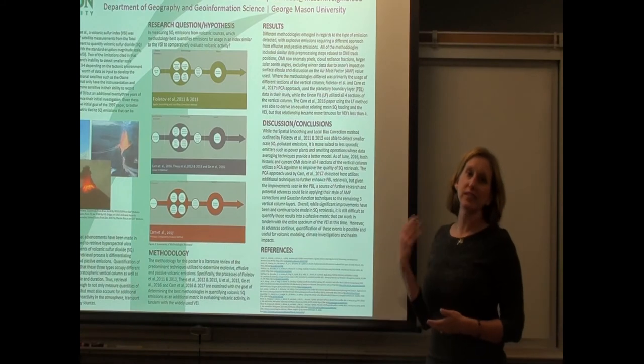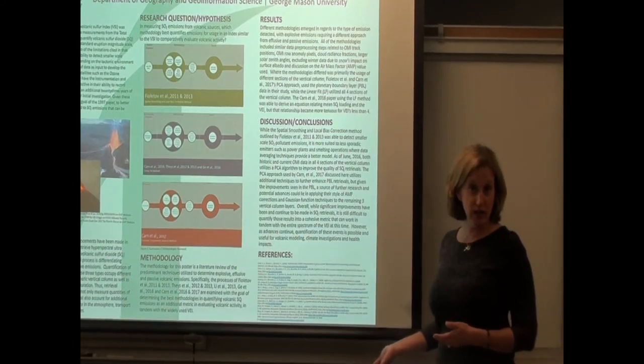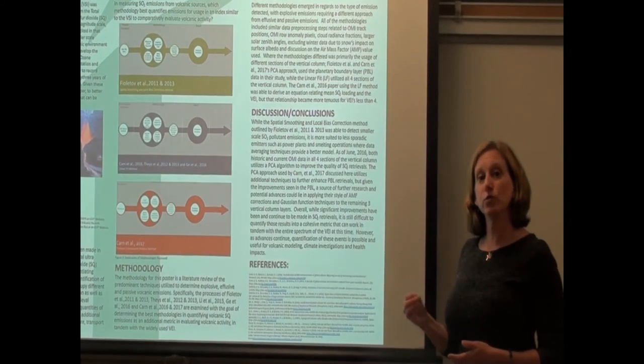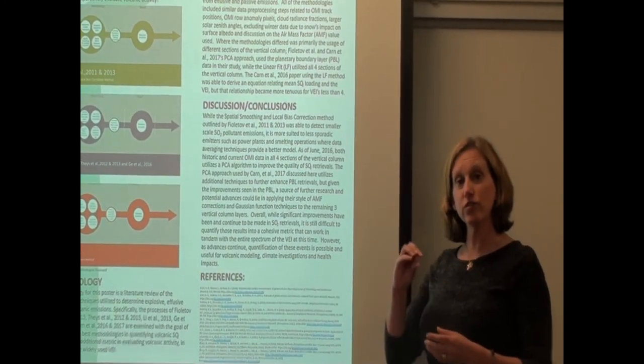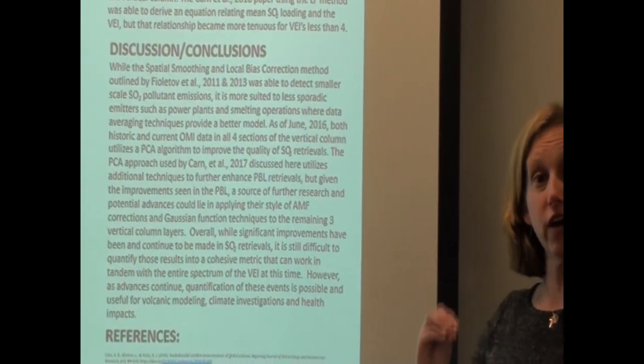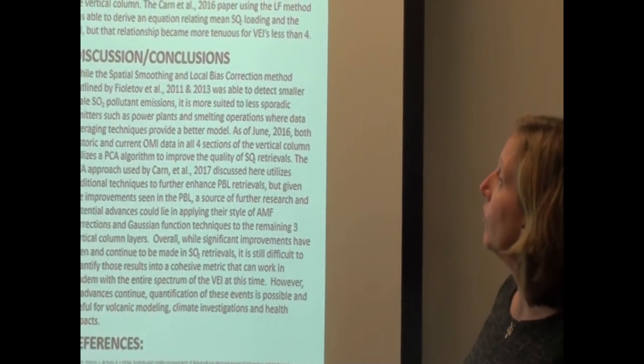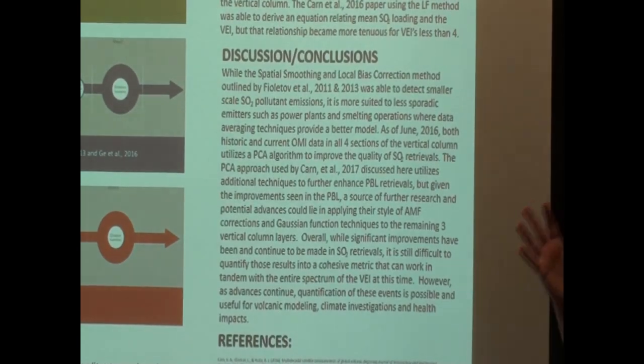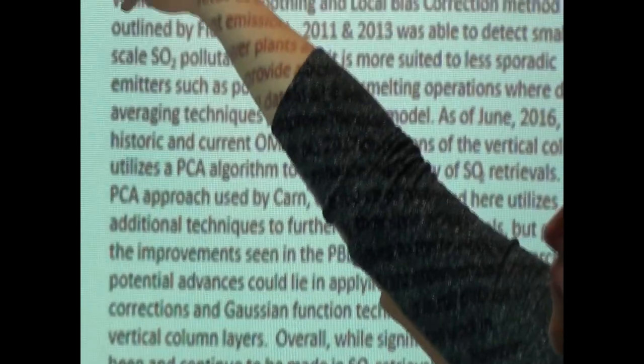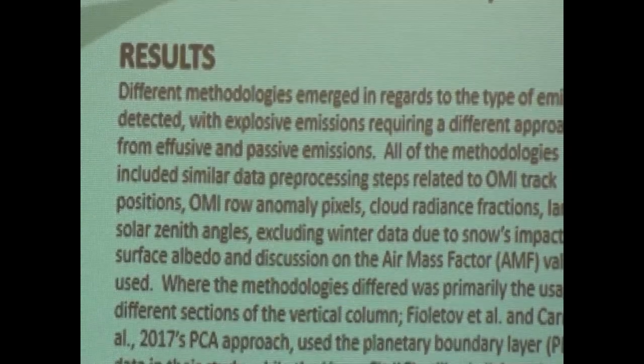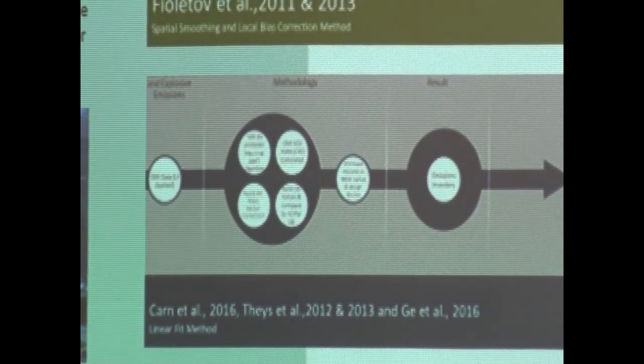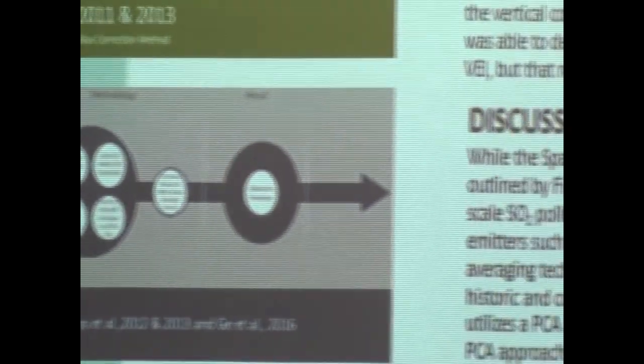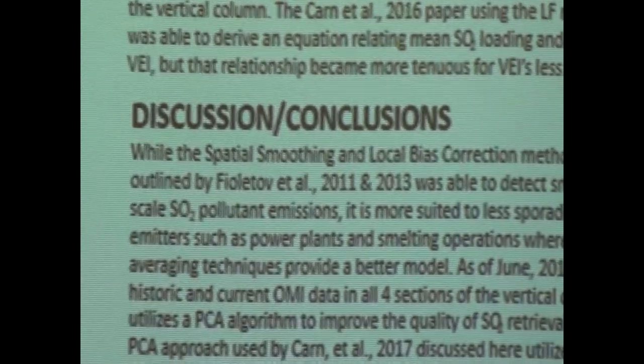These methodologies differ within the air mass factor calculations. Some of them used just a constant air mass factor, others tailored it to the specific portion of the column that they were looking at. Overall, within these studies, the first one and the third one only looked at the planetary boundary layer, whereas the one in the middle, the Carn et al. 2016 and the associated papers, did take in the entire column into account when assessing the SO2 emissions.